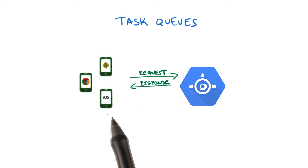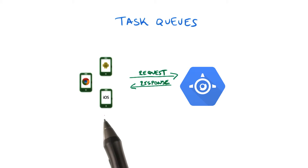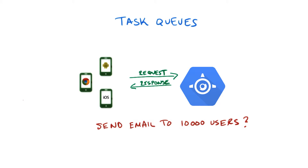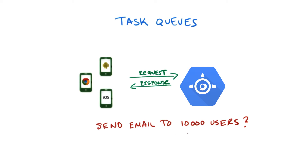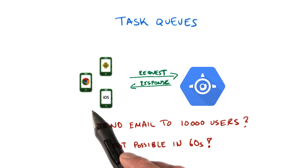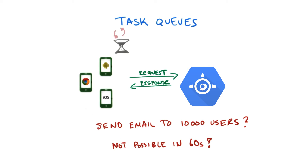But let's say that the user activity triggers something big to happen. For example, the user adds a new conference, and as a consequence of that, 10,000 emails should be sent out to notify other users about this conference. First of all, that's not possible within 60 seconds. And secondly, you certainly don't want the poor user that just registered the conference to wait for this to happen. Remember, the screen update depends on your response, so even seconds are crucial to keep your application responsive.